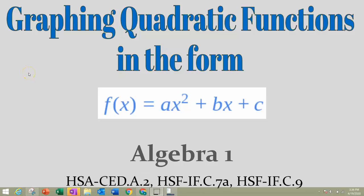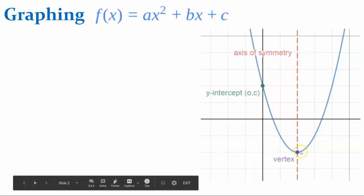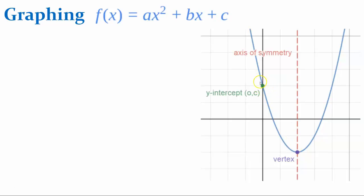Welcome to graphing quadratic functions in the form f(x) = ax² + bx + c. This is the standard form of a quadratic function. When graphing standard form, we have three very important things to look for. First, we want to find the axis of symmetry. The vertex will lie on the axis of symmetry. Then we have the y-intercept, which is always the value (0, c). C can be found directly in the equation, so c tells us the y-intercept.